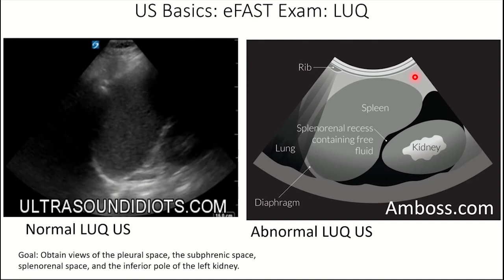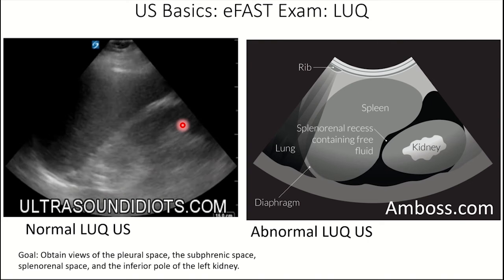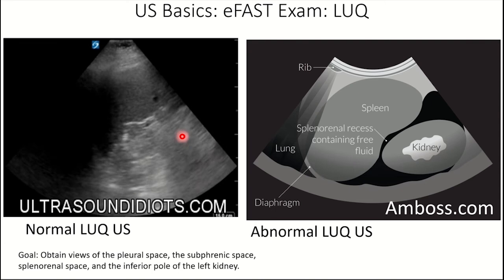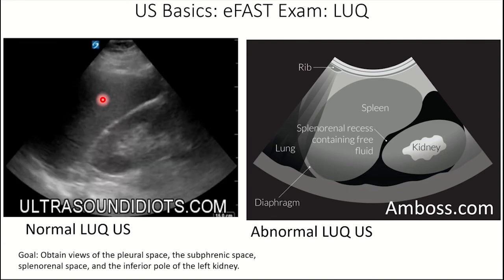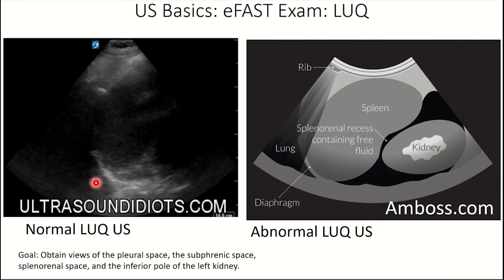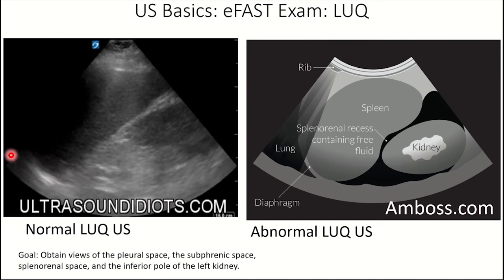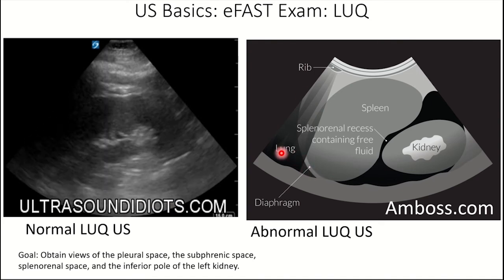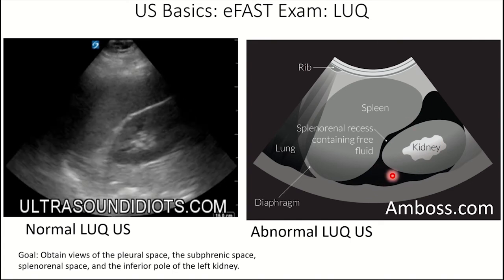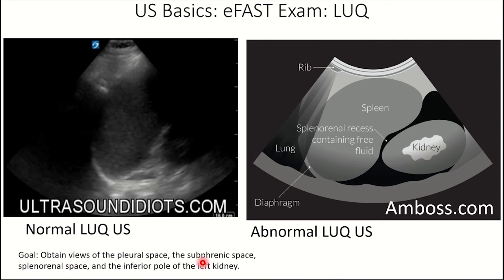Moving on to the left upper quadrant — here is a normal LUQ ultrasound. There is some rib shadowing, but we can clearly see the kidney with the white area surrounded by hypoechoic tissue. Because we're on the left side, the liver-like structure is actually the spleen — they have the same echogenicity. Looking at the edge of the spleen, we can see the white diaphragmatic stripe, and after that is the lung. When doing this ultrasound, check the pleural space, the subphrenic space, the splenorenal space, and the inferior pole of the left kidney.